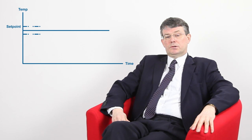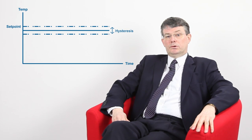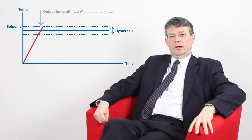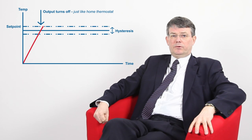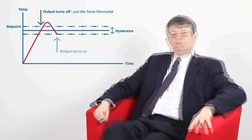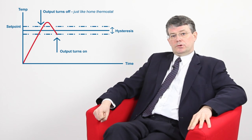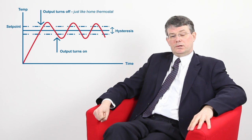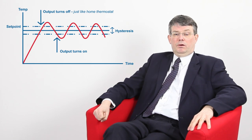We've seen that proportional control will give better stability in the process, so you might wonder why anyone would ever use on-off control. A proportional controller must always be tuned to the process, and this can be a little bit daunting for users. If the process doesn't require a high level of stability, the simplicity of on-off control can sometimes be attractive. Unlike proportional control, on-off control only has a maximum of one parameter to adjust — this is the on-off differential.